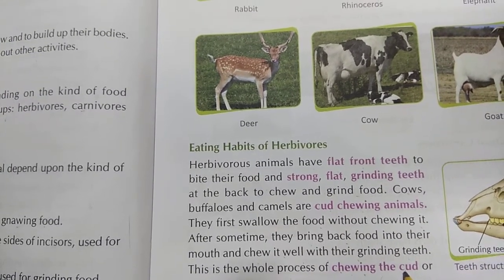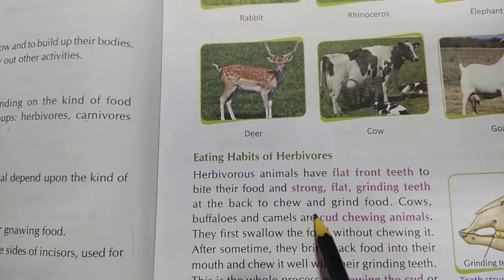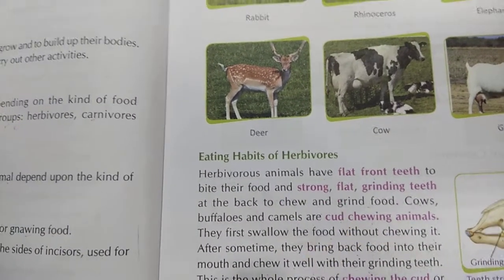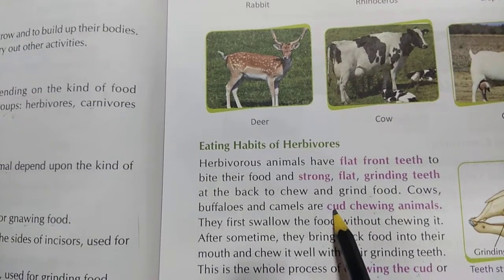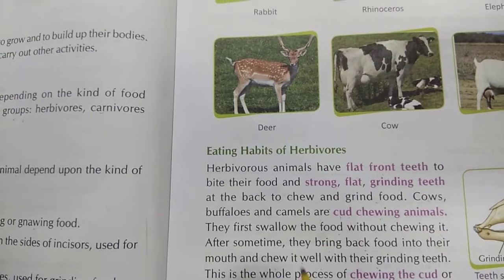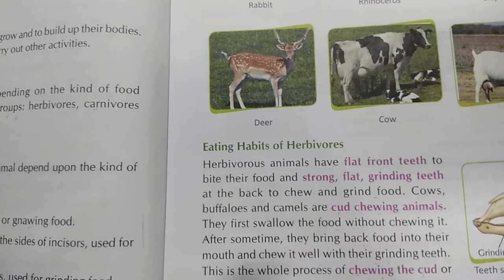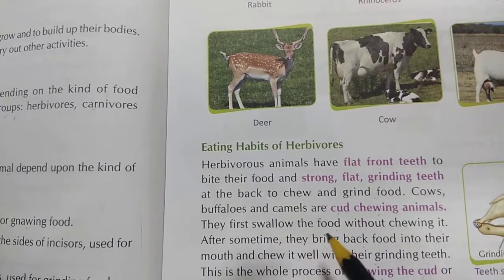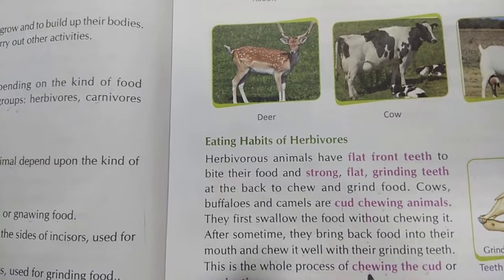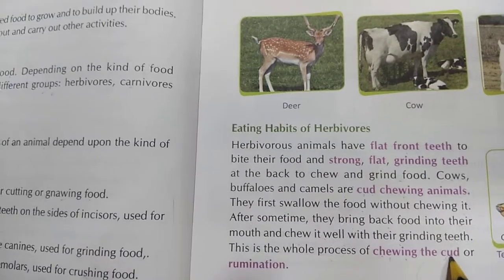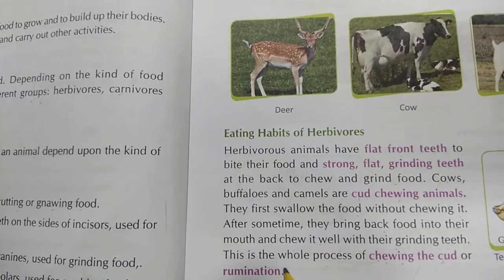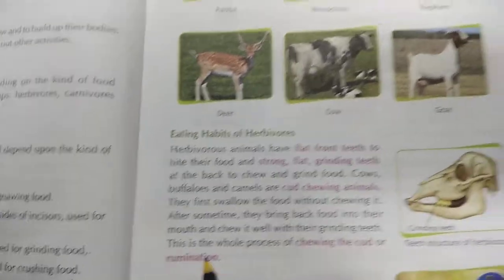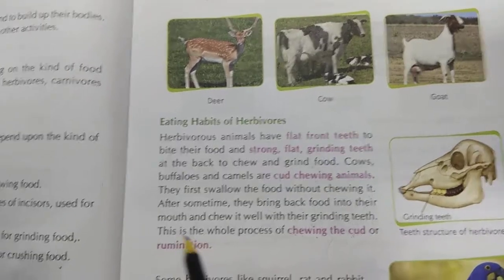Cud means: they eat the plant and just store it without chewing. That stored material is called cud. After some time they bring it back and chew it. Did you see animals when they lie down, they just keep on chewing with their mouth moving? That is called chewing the cud, or rumination. The process is called rumination. As you grow, you will study more about this process.